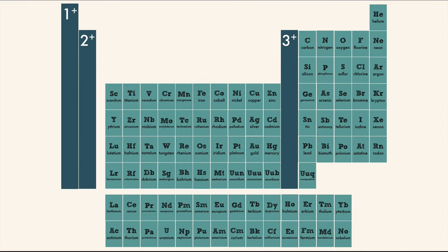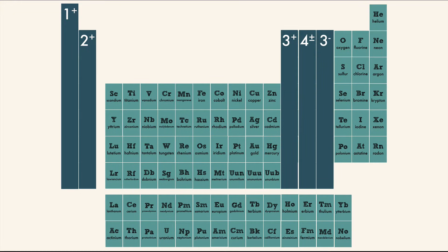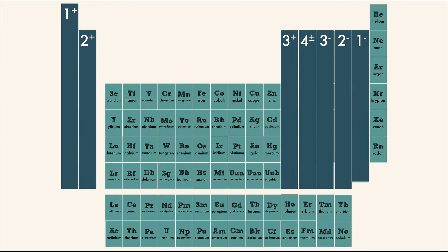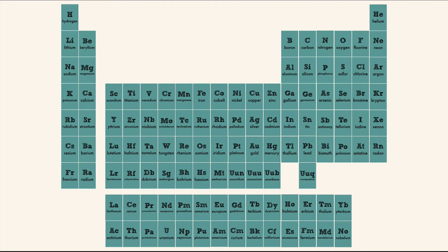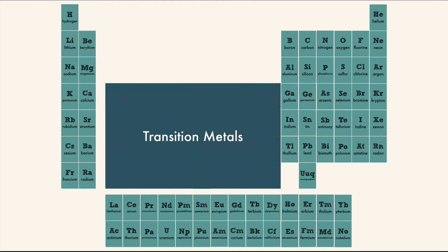Carbon could act as a cation or an anion with a plus or minus 4, but it usually doesn't form ions — it would prefer to make covalent bonds. Column 15 becomes −3 anions, column 16 becomes −2 anions, and column 17 becomes −1 anions. Transition metals form cations, but many of these atoms have more than one possible charge.